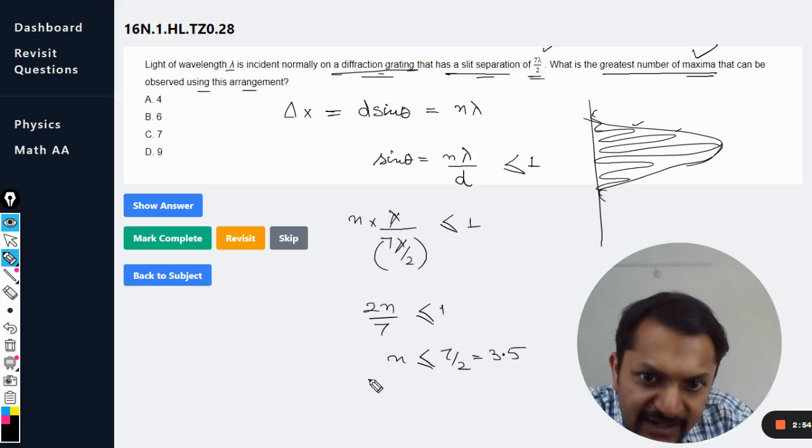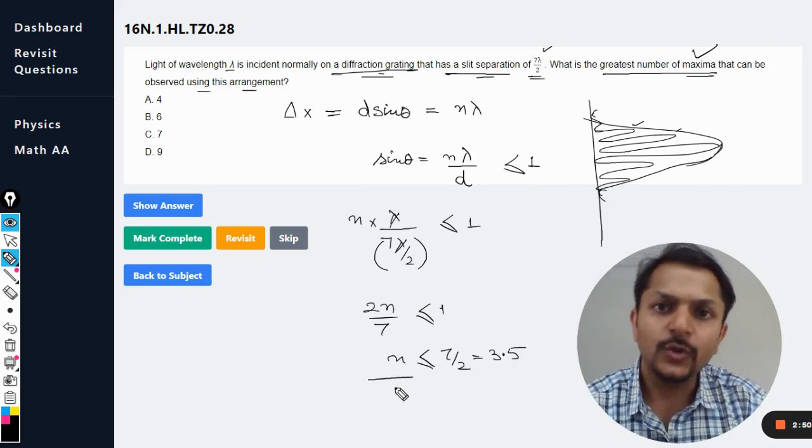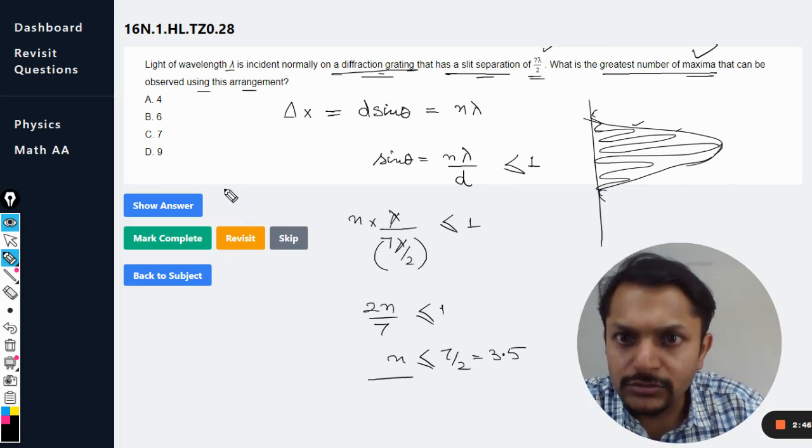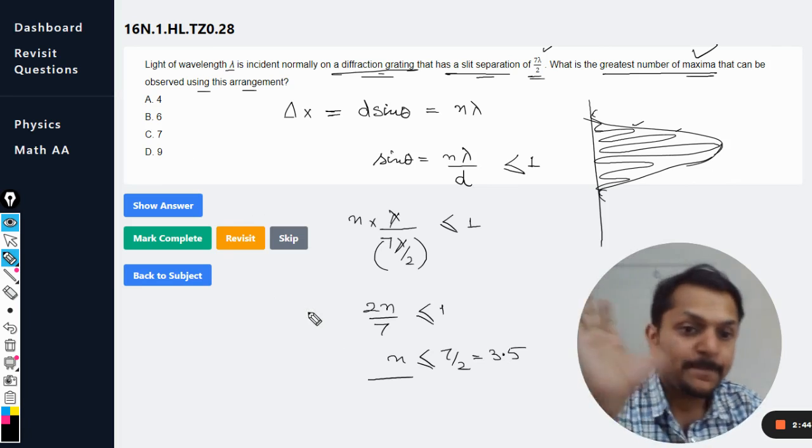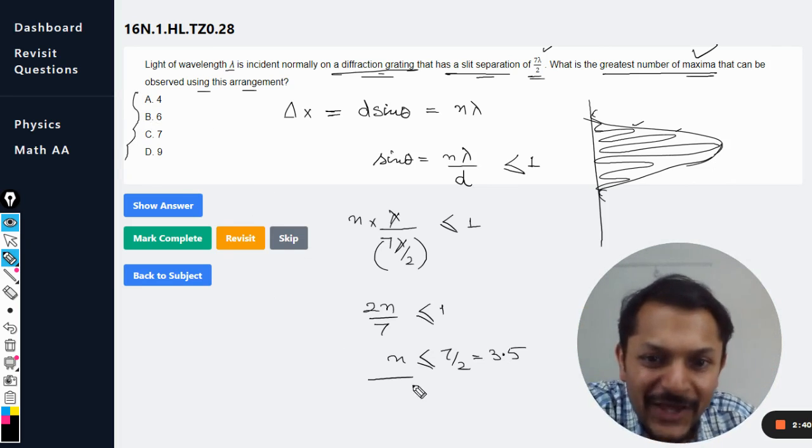N is an integer and it has to be less than 3.5. So what is the maximum value of such an n? 3. Yes, okay, there is another catch here.